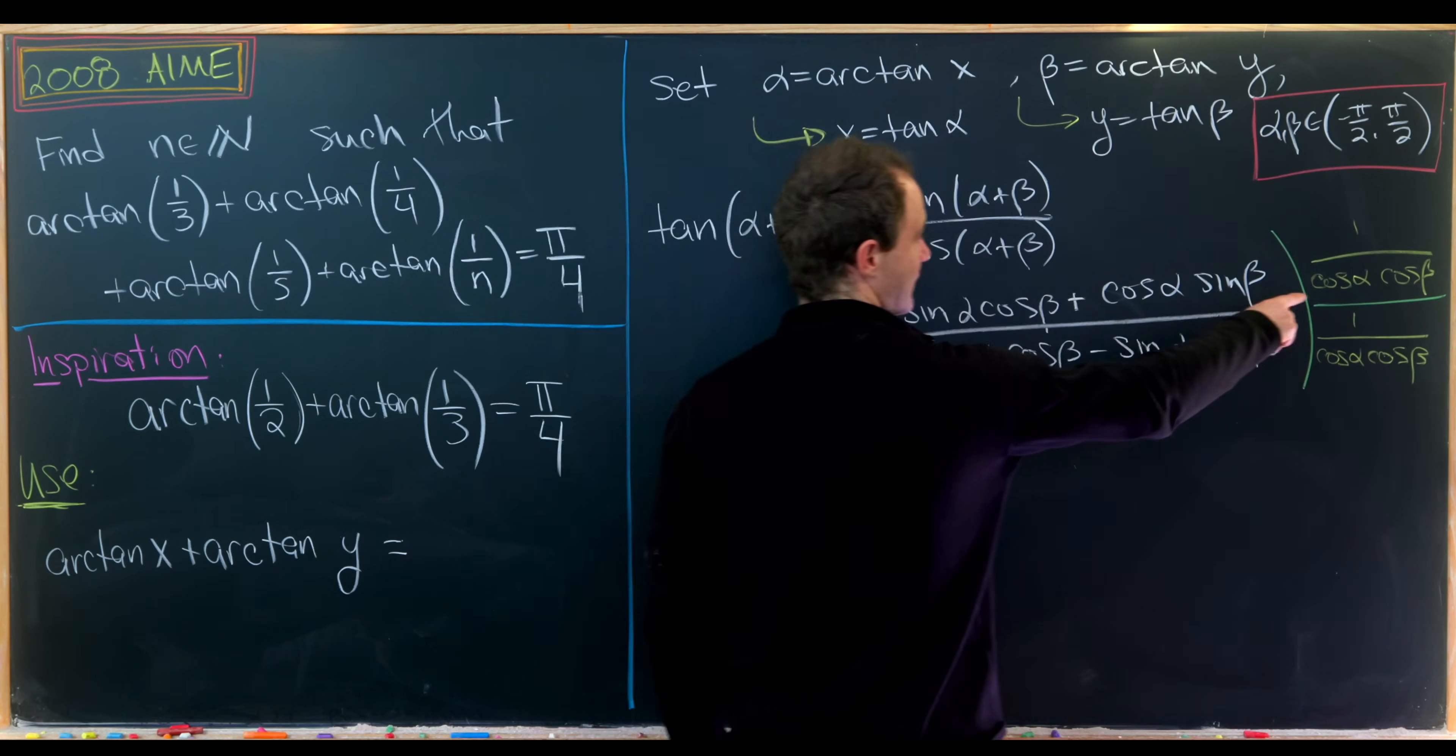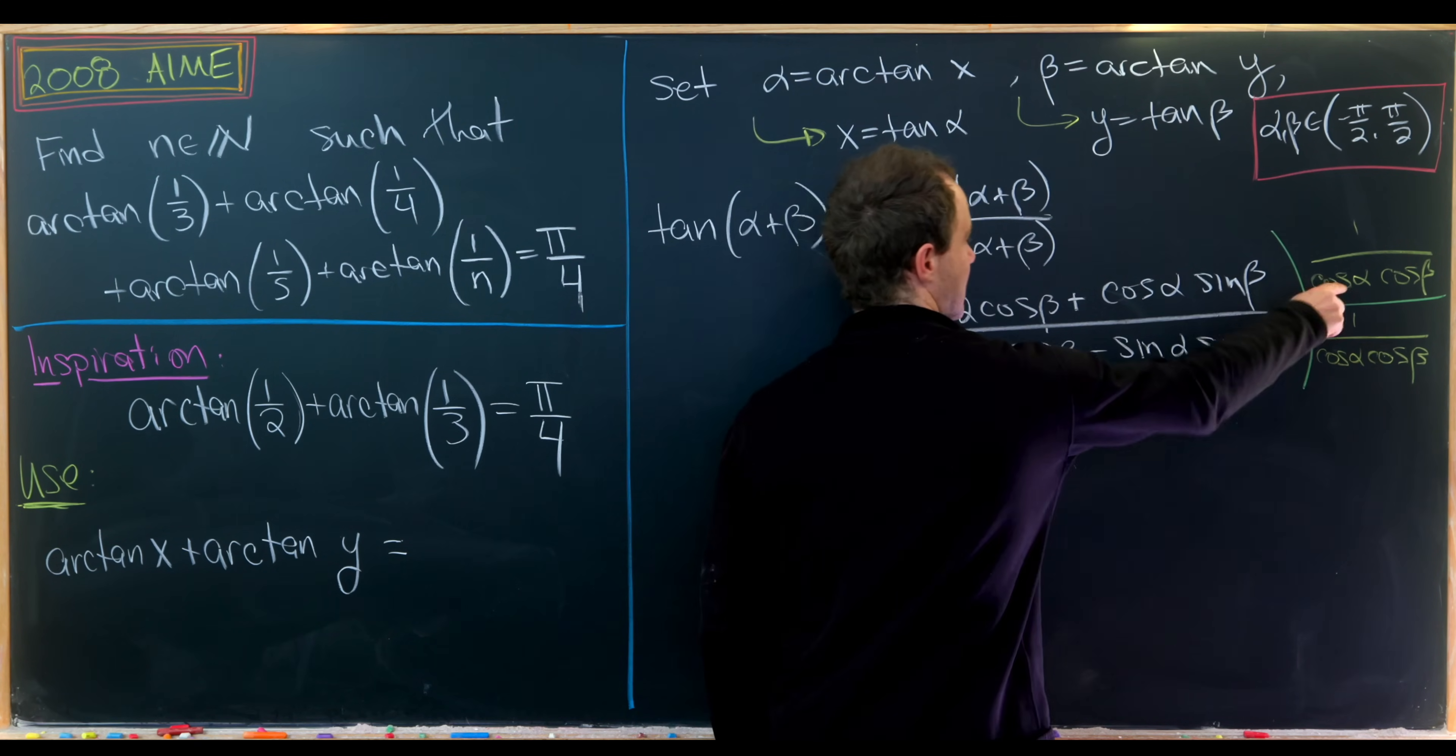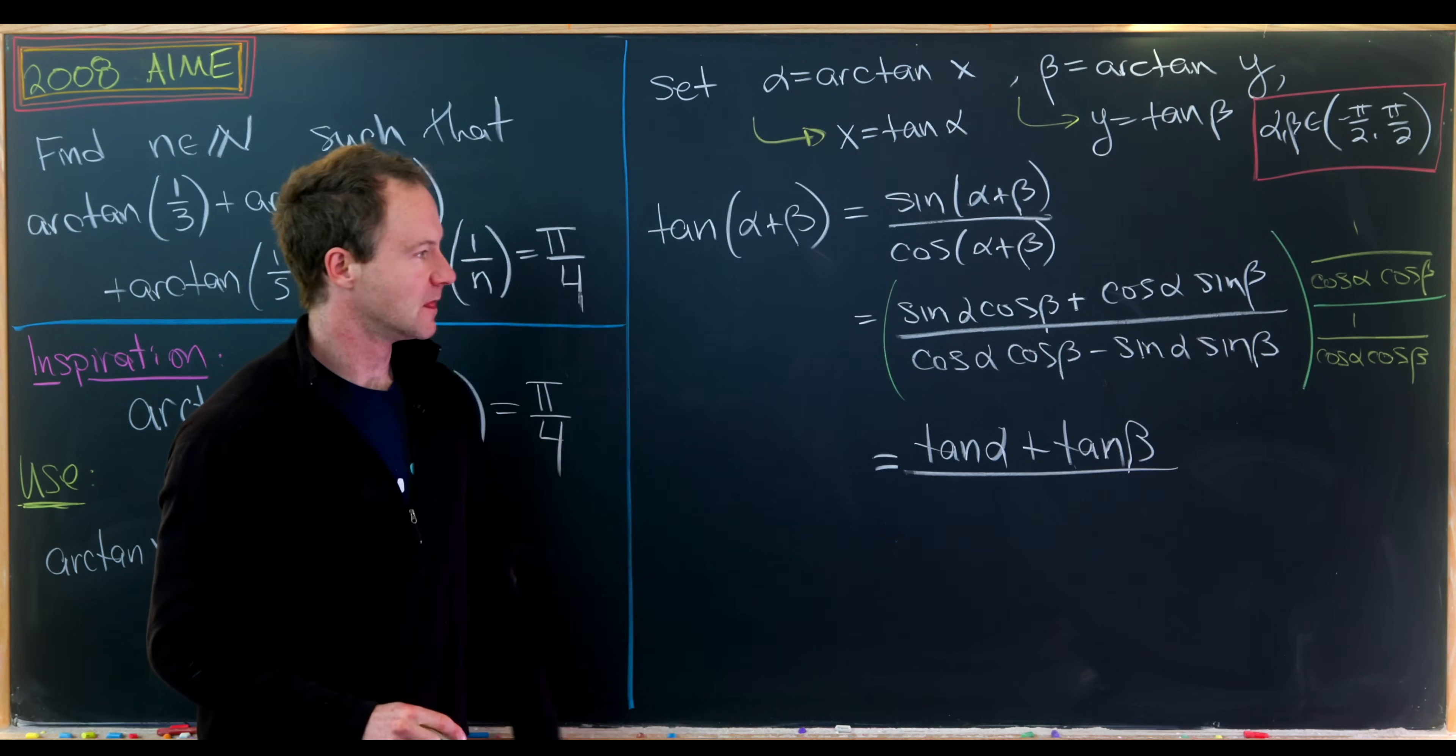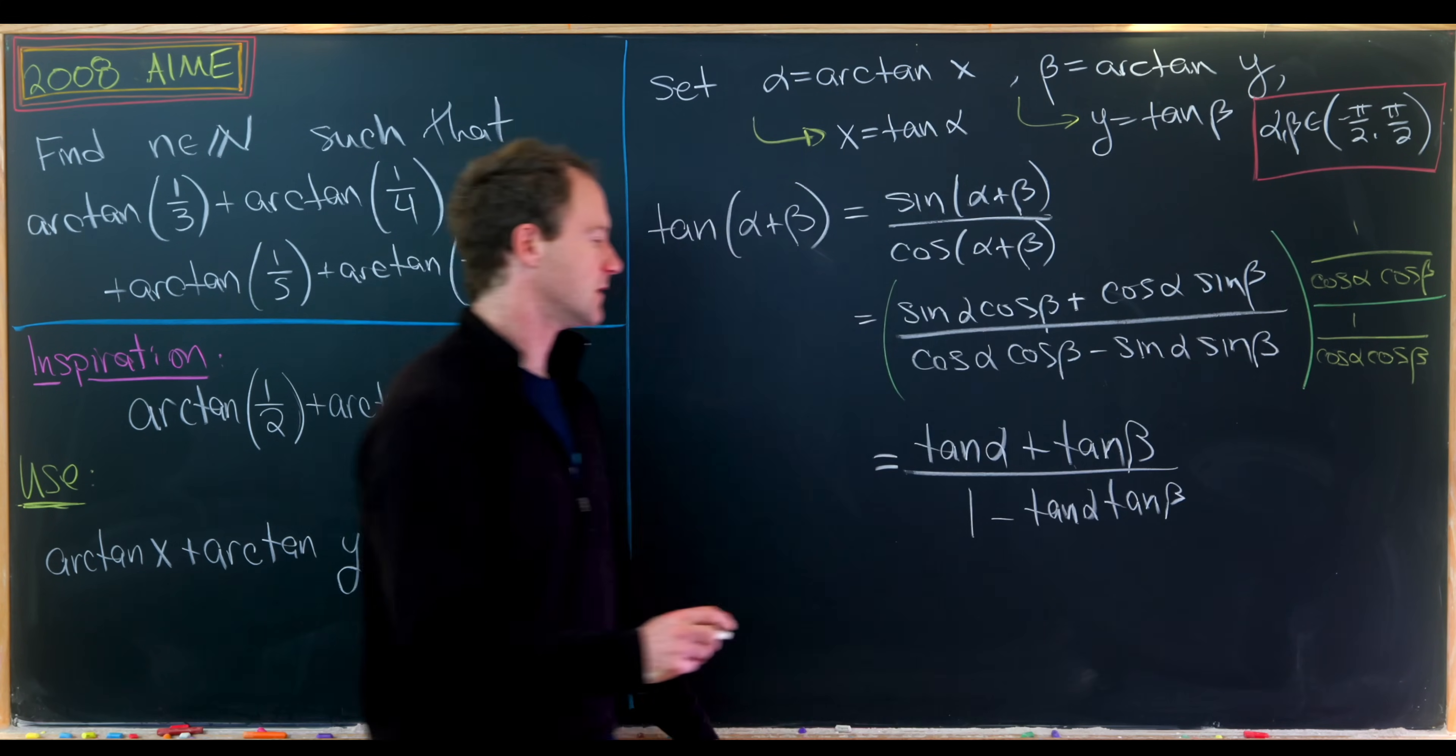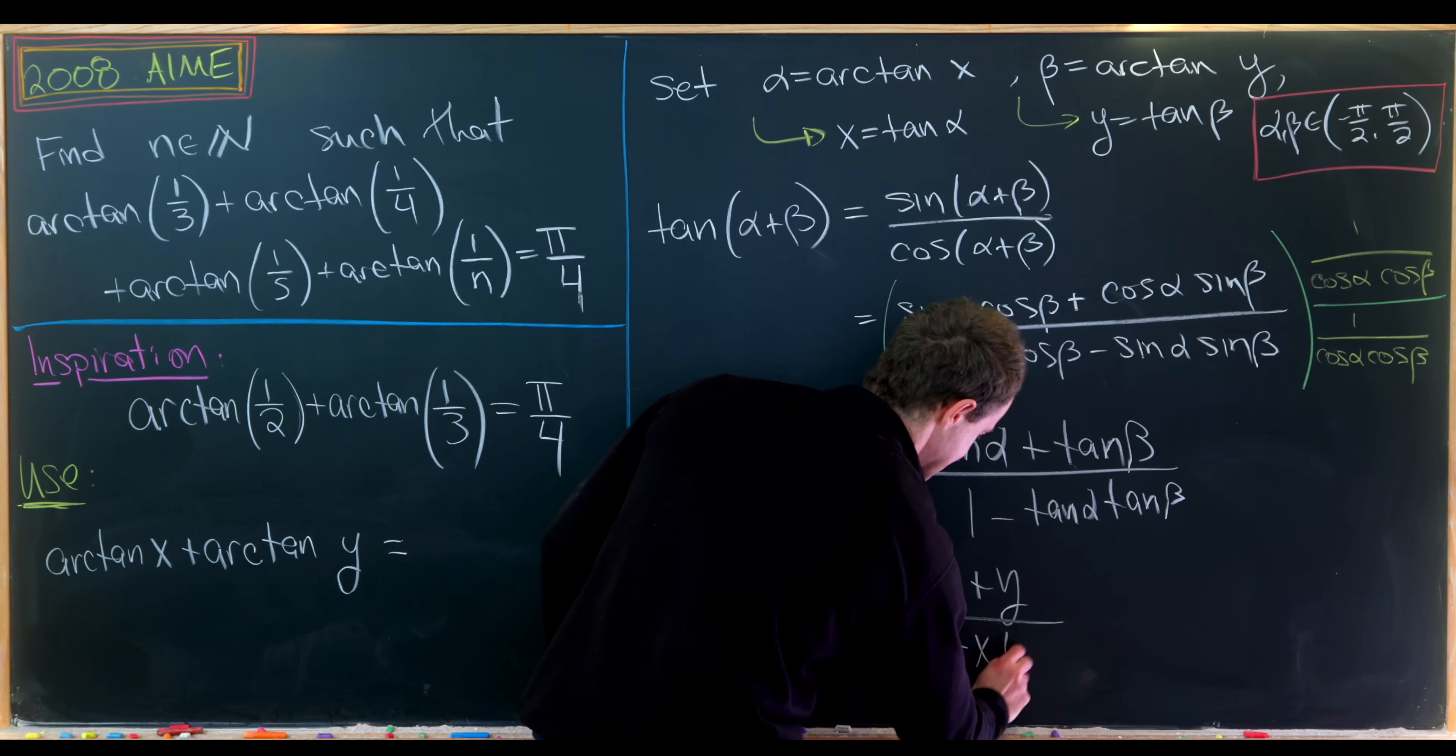We'll have sin(α)/cos(α), that is tan(α), and then cos(β)/cos(β) that's simply 1, plus cos(α)/cos(α) that's 1, and sin(β)/cos(β) that's tan(β). In the denominator we have 1 - tan(α)tan(β).